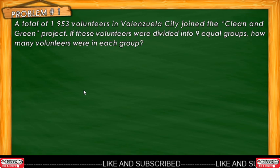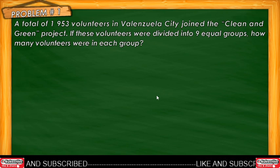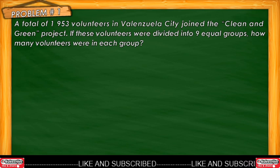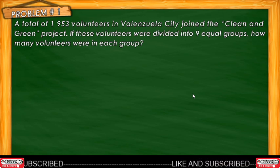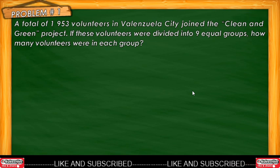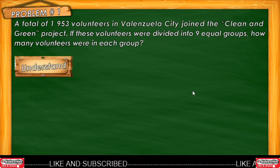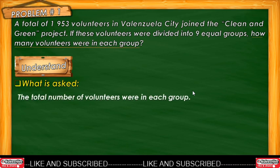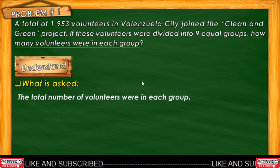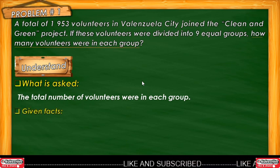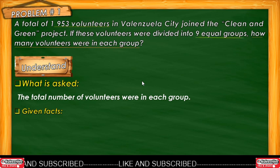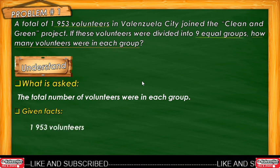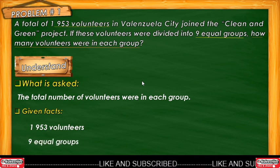Let's start with a problem. A total of 1,953 volunteers in Valenzuela City joined a clean and green project. If these volunteers were divided into 9 equal groups, how many volunteers were in each group? Let's analyze. What is asked? The total number of volunteers in each group. What are the given facts? We have 1,953 volunteers and 9 equal groups.